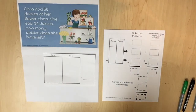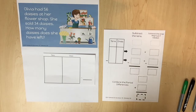The partial differences method is a method where numbers are decomposed into expanded form and like values are subtracted. This is called the partial differences method because students are finding the partial difference for each place value and then combining the partial differences to determine the difference of the original problem.